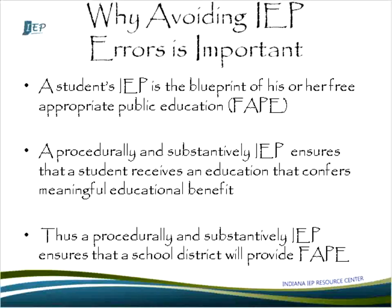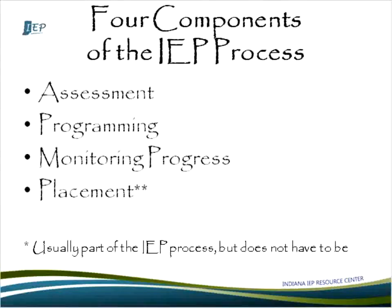An IEP that is procedurally and substantively correct ensures that a student will receive an education that confers meaningful educational benefit. A procedurally and substantively correct IEP will ensure that a school district provides FAPE. As we go through the webinar, I'll be talking about four different components in the IEP process: assessment, programming, monitoring progress, and placement. These are the major parts of the IEP, and many of the errors we'll see in IEP development stem from these four areas.